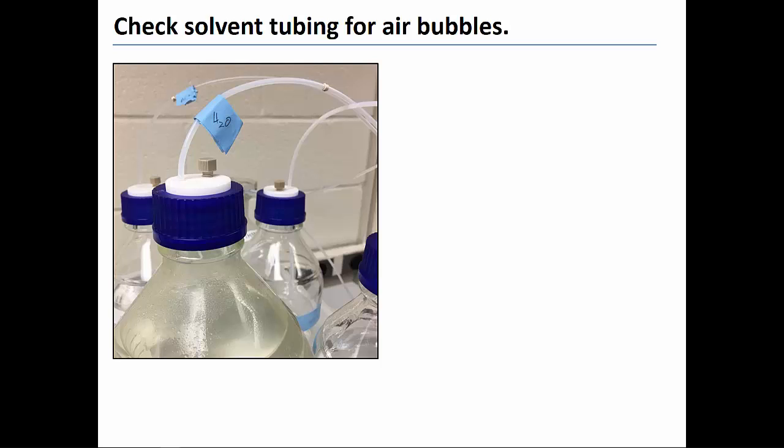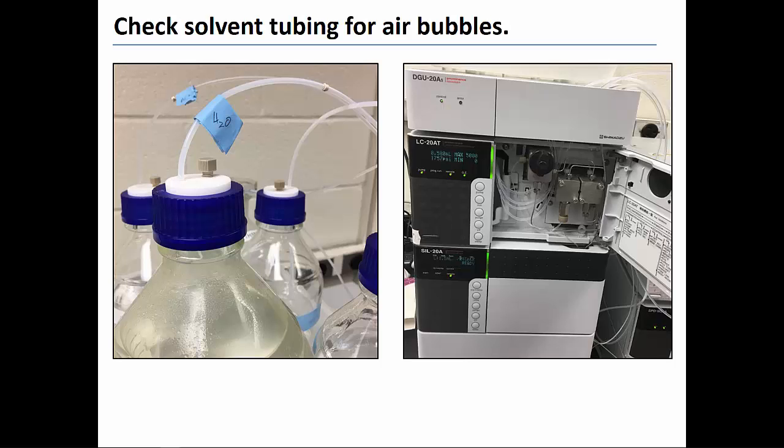Prior to starting an analysis, be sure to check the lines from the solvent bottles for air bubbles. If air bubbles are allowed to reach the column, column performance can deteriorate. If you see any bubbles in the lines between the solvent bottles and the pump, open the pump purge valve by rotating counterclockwise one half turn. After you open the purge valve a half turn, solvent will flow from the pump directly to the waste container without passing through the column or any detectors. Keep the purge valve open until all air bubbles pass through the pump. This may take several minutes.